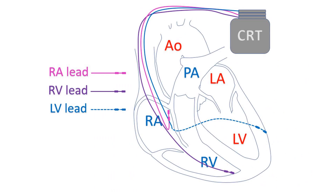Cardiac resynchronization therapy is used when the contraction of the left ventricle has lost its synchrony. The left ventricle is the lower left chamber of the heart which pumps oxygenated blood to the whole body. In several patients with heart failure, there is lack of synchrony between the contractions of different parts of the left ventricle — when one part contracts, the other part would not have started contracting.